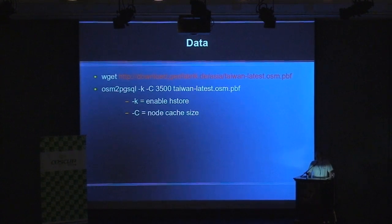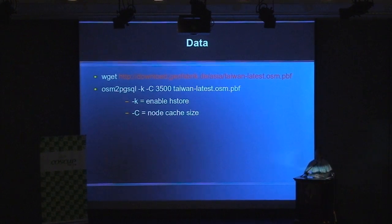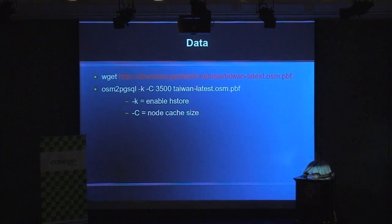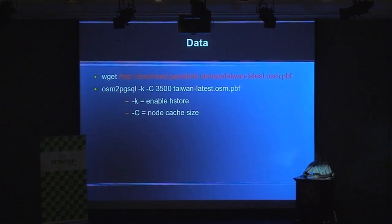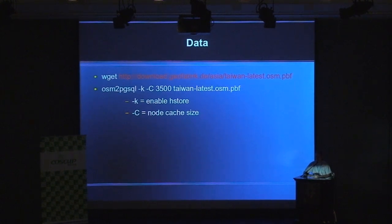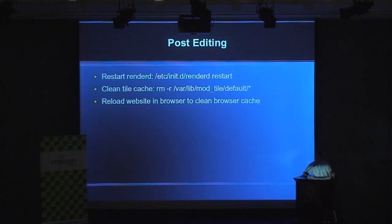There are two important import options. One is the node cache size, which depends on how large your data is — for Taiwan, a cache size of 3,500 is enough, while for a full planet file you would need 12,000 or more. The other option is dash-k to enable HStore. HStore means you have a set of predefined fields in your database, and HStore stores all other fields that are not predefined — so you still have all data available without the database being too large.